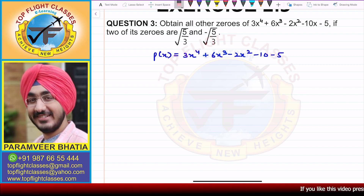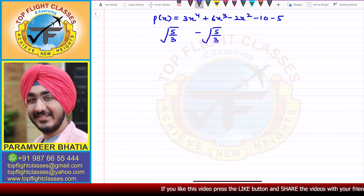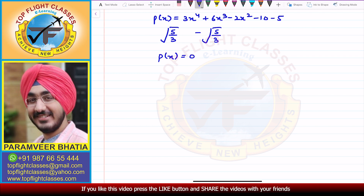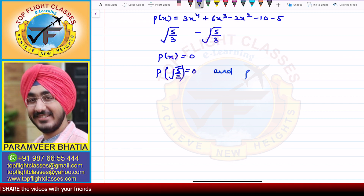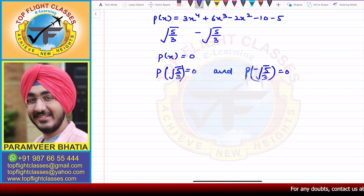Two zeros are given to you. What are the two zeros? Root of 5/3 and minus root of 5/3. Now, when you have zeros of a polynomial, we write p(x) = 0. That means p(√(5/3)) = 0 and also p(-√(5/3)) = 0.